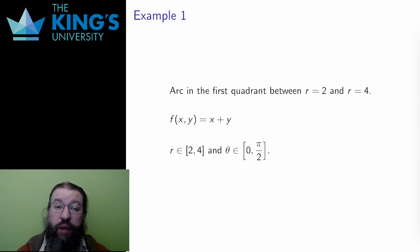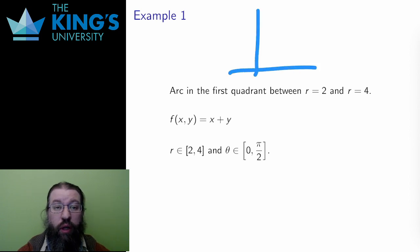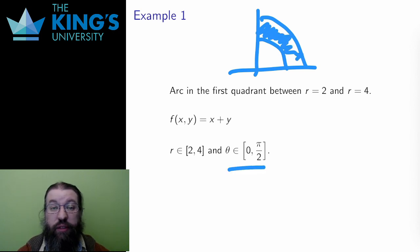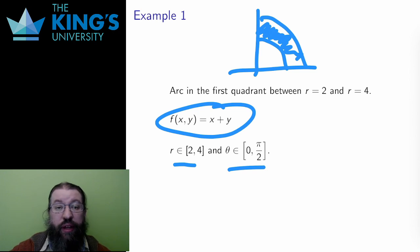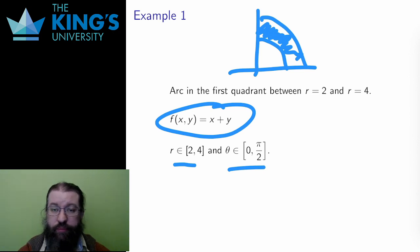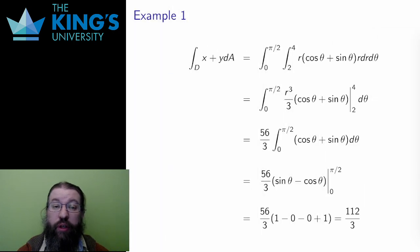First, the region I want is the arc in the first quadrant between radius 2 and 4. The first quadrant is angle between 0 and pi over 2, and the radius bounds are 2 to 4. The function I want to integrate is f of x equals x plus y. Often the functions will still be given in Cartesian coordinates. I need to change the function to polar coordinates before integrating. To do that, x will be replaced with r cos theta and y with r sin theta.